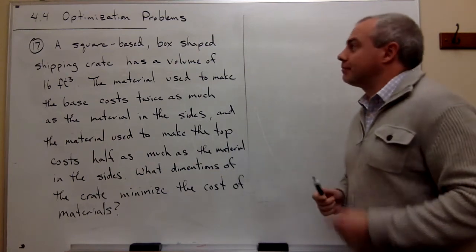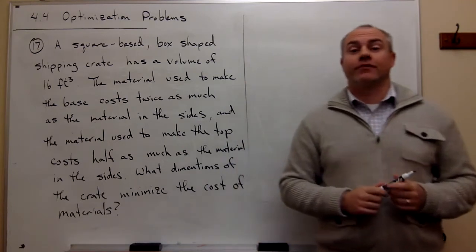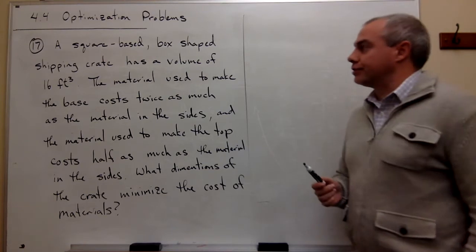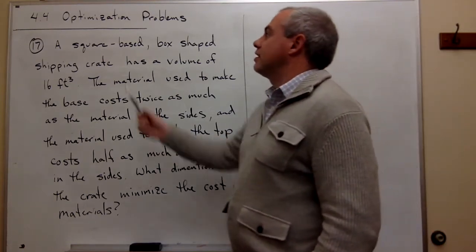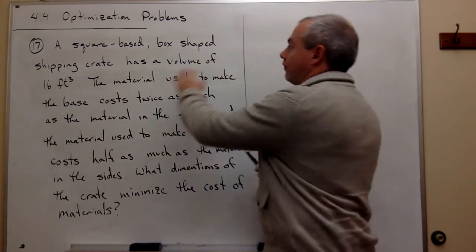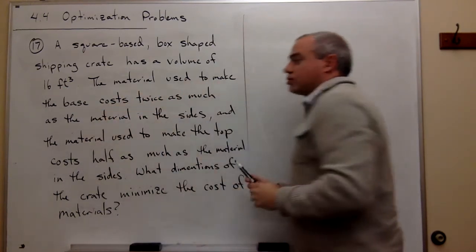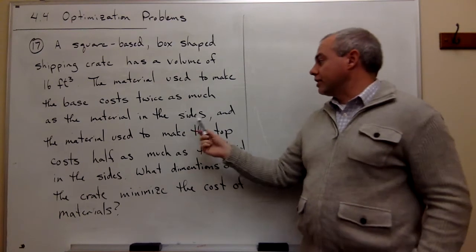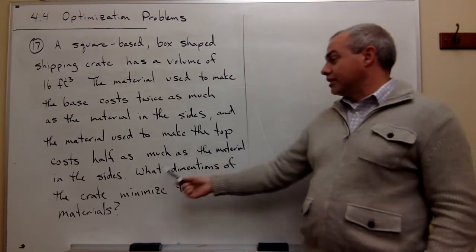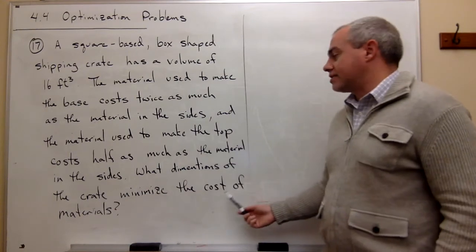Now let's look at problem number 17. Number 17 is another optimization problem. Let's read the problem together and get a feel for what we're trying to do. Problem number 17 says: a square-based box-shaped shipping crate has a volume of 16 cubic feet. The material used to make the base costs twice as much as the material in the sides, and the material used to make the top costs half as much as the material in the sides. What dimensions of the crate minimize the cost of the materials?